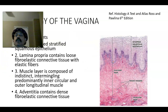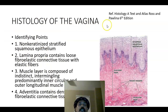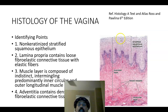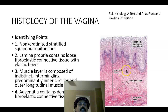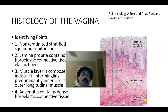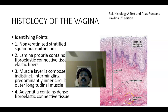Looking at the histology of the vagina, the lining epithelium is non-keratinized stratified squamous epithelium. Then we get the lamina propria, which is rich in blood vessels and lymphatics, and also contains some neutrophils. The muscle layer is composed of indistinct intermingling fibers, predominantly an inner circular muscle layer.